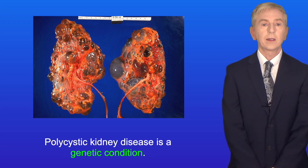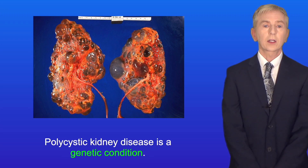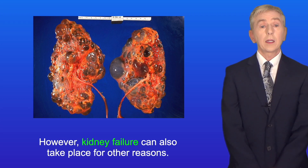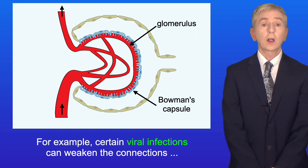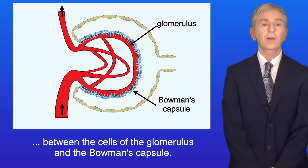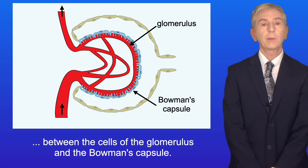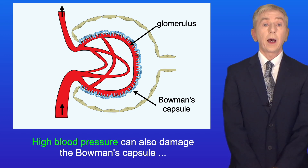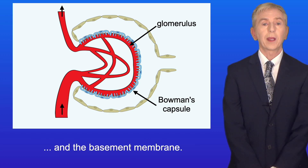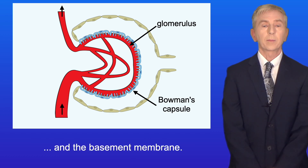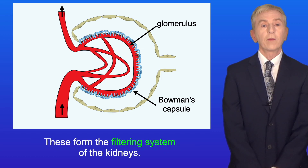Polycystic kidney disease is a genetic condition. However, kidney failure can also take place for other reasons. For example, certain viral infections can weaken the connections between the cells of the glomerulus and the Bowman's capsule. High blood pressure can also damage the Bowman's capsule and the basement membrane. Now, these form the filtering system of the kidneys.